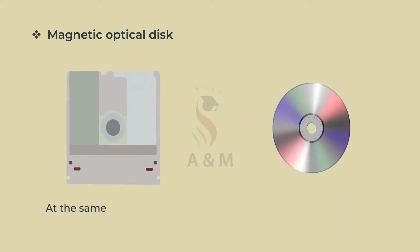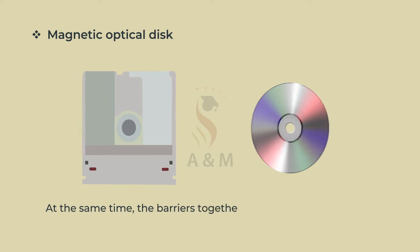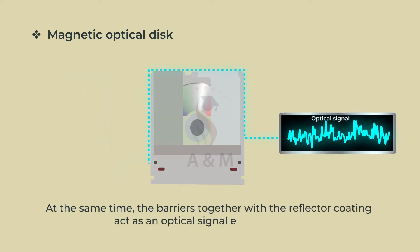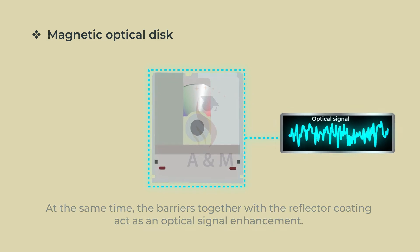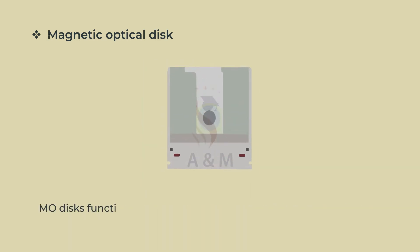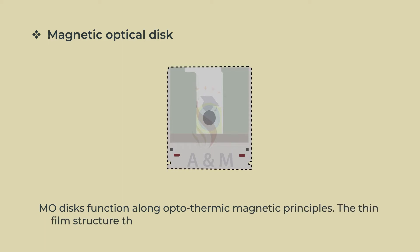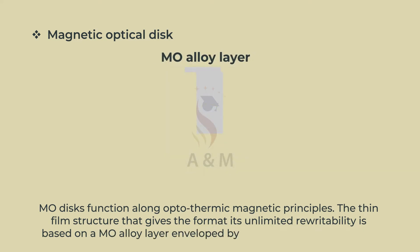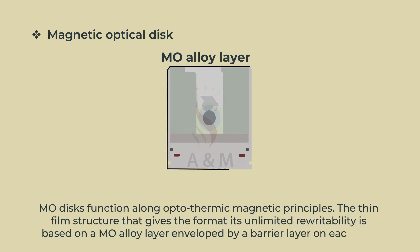At the same time, the barriers together with the reflector coating act as an optical signal enhancement. MO discs function along optothermic magnetic principles. The thin film structure that gives a format its unlimited rewritability is based on the MO alloy layer enveloped by a barrier layer on each side.